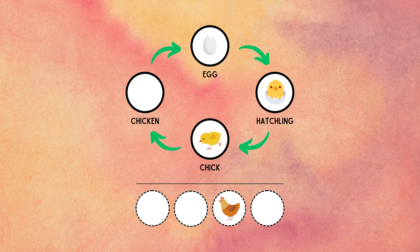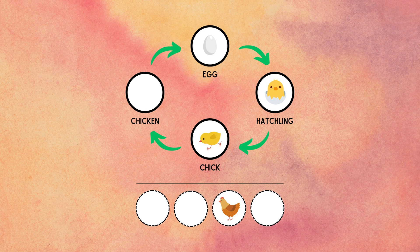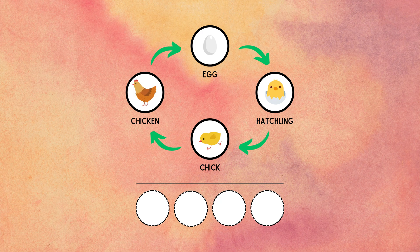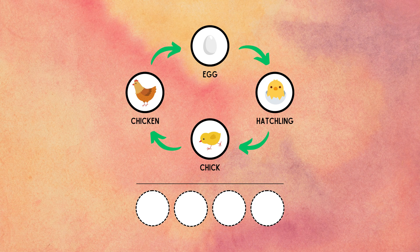At this stage, the chick is covered in soft down feathers and is entirely dependent on the mother, or a caretaker, for warmth, protection, and food. It takes around 5 to 7 months for a chick to become a fully grown adult chicken and be able to continue the life cycle.